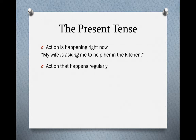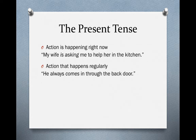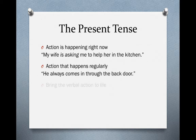The present tense can also indicate action that happens regularly. For instance, if we say 'he always comes in through the back door,' the word 'always' in the context helps us understand this happens regularly. But sometimes we wouldn't even need that — we could say 'he comes in through the back door' and the context would clarify that this is action that happens regularly. This is another function of the present tense.